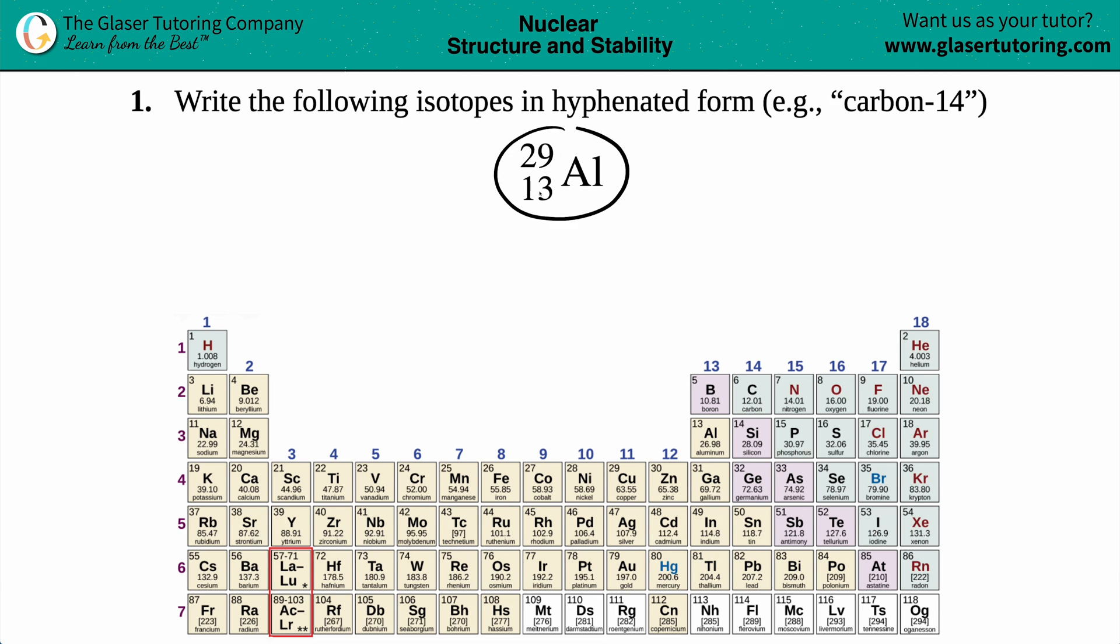which is e.g., carbon-14. So we have 29, 13, Al. We have to take this isotope and write it in terms of the element name. The example they gave us was carbon.